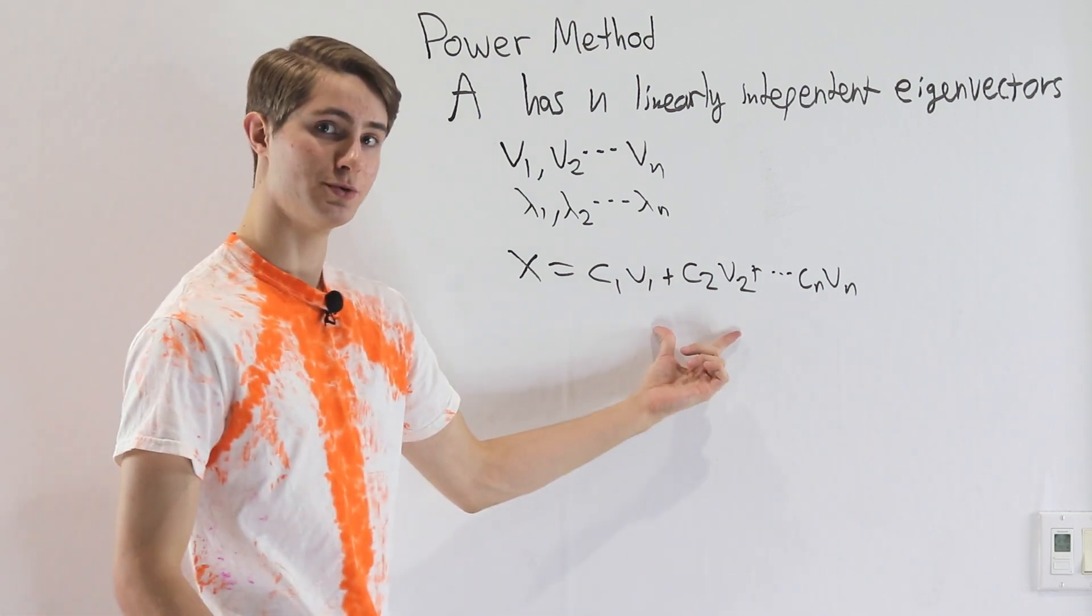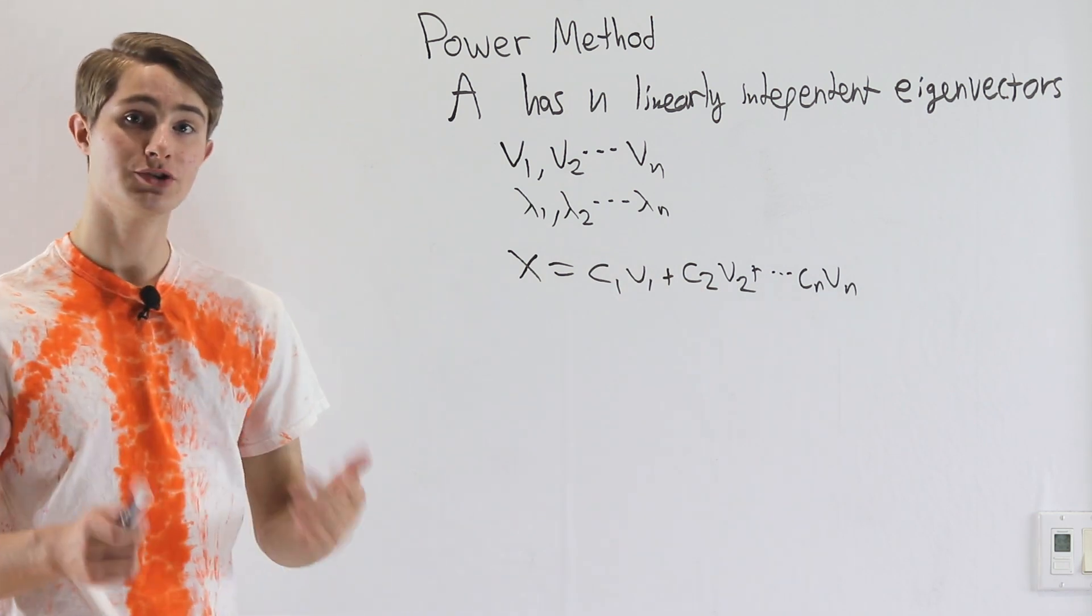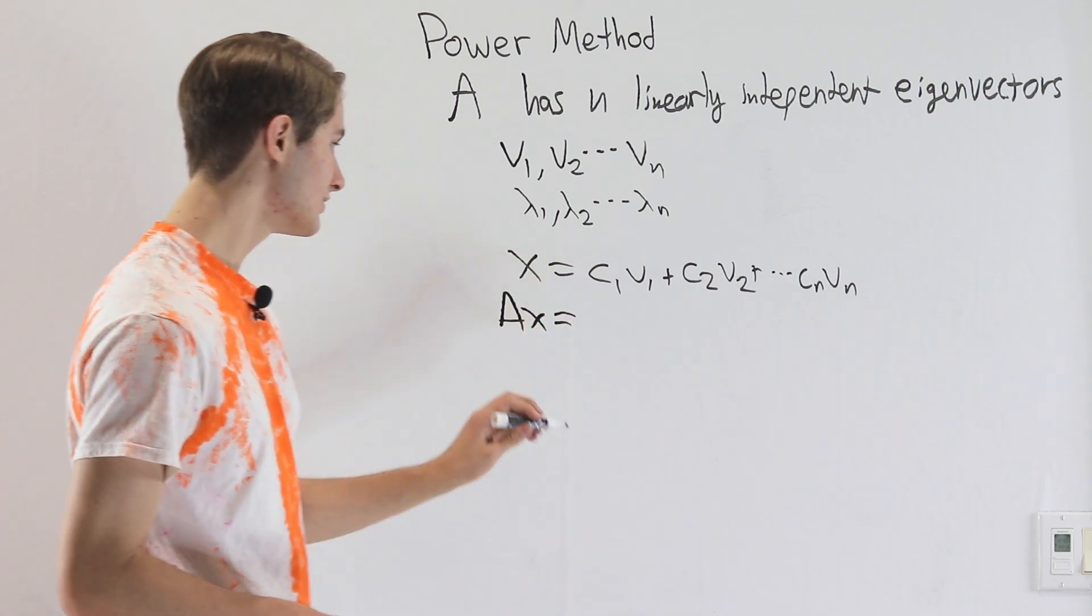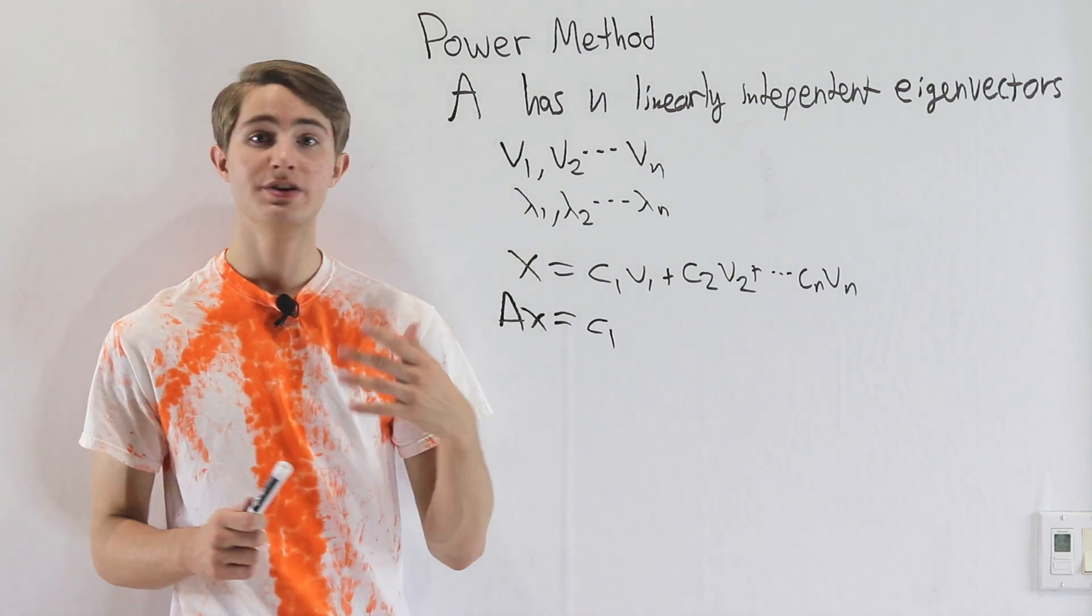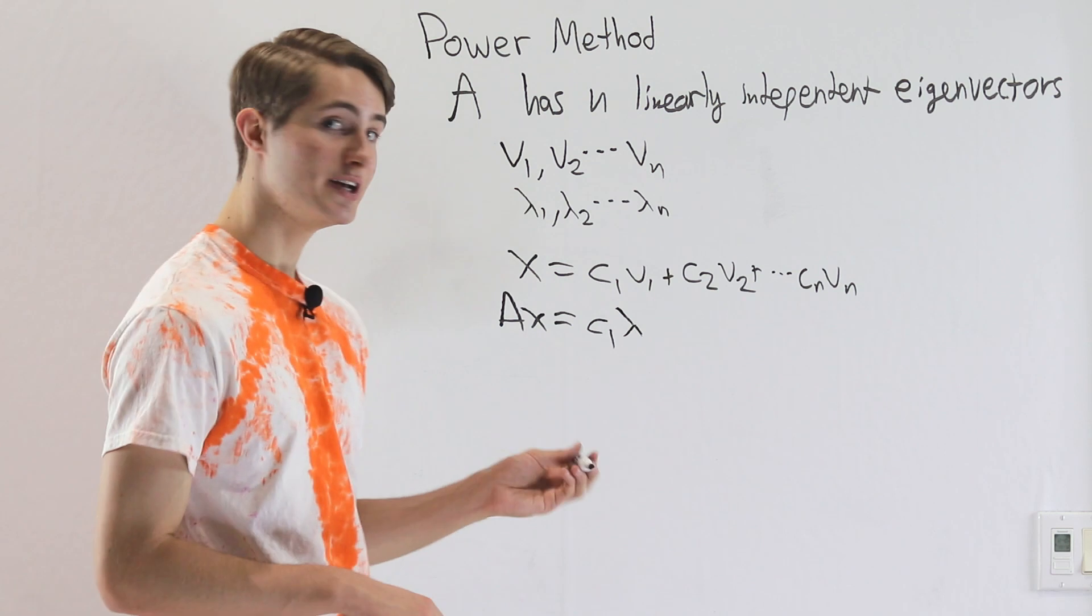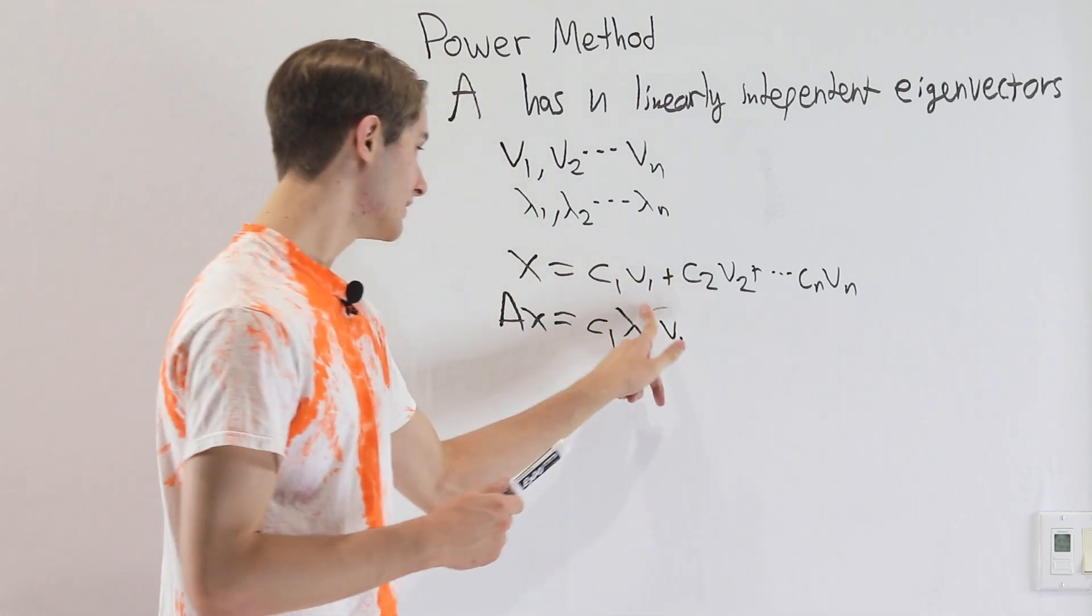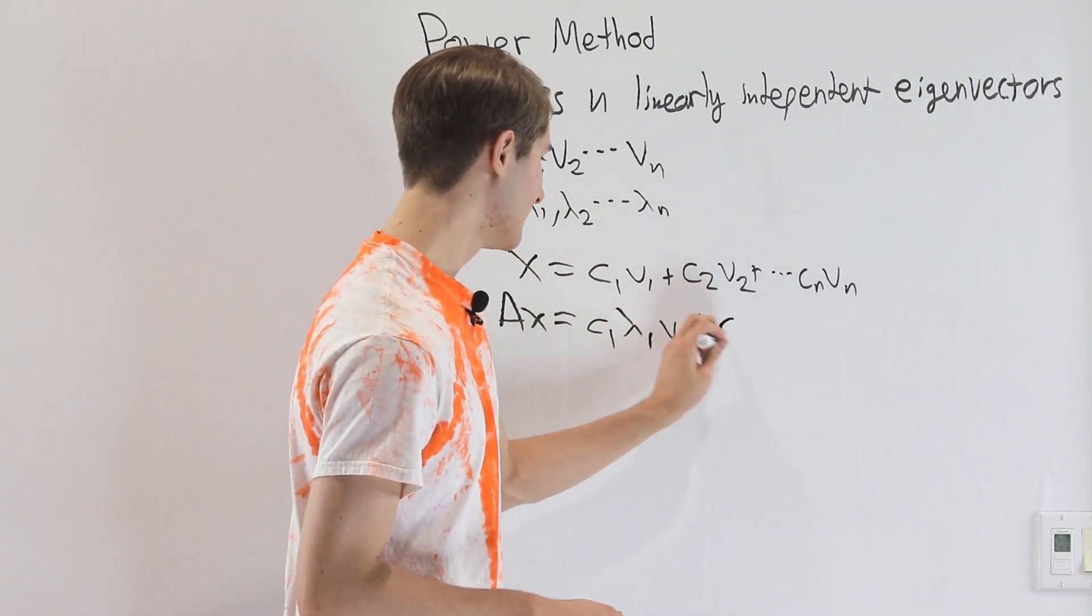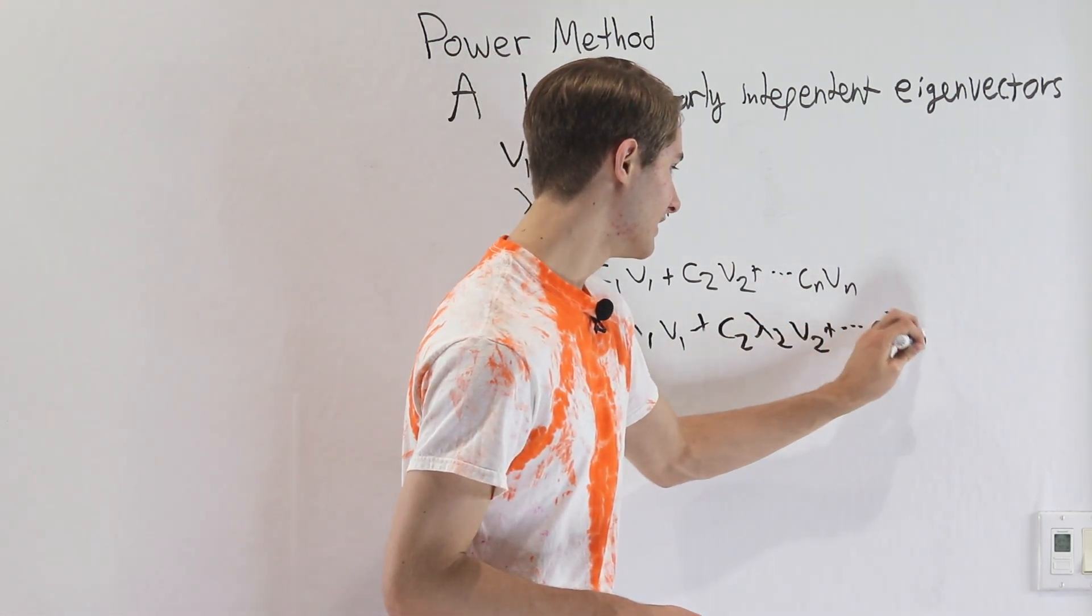Now here's the reason why this is important. What we're going to do is take both sides of this equation and multiply by A. So on the left we get Ax, on the other side we're going to get c1, what is A times v1? Well v1 is an eigenvector, so if you apply the matrix it has the same effect as scaling it by the constant lambda 1. So in fact we can completely get rid of the matrix A on the right side and just have lambda 1 v1. Next we add c2 lambda 2 v2 and we go on cn lambda n vn.